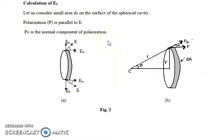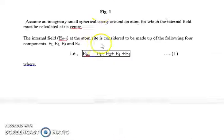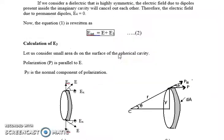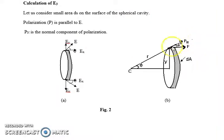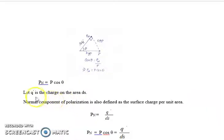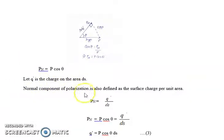In order to find out the electric field due to the charges induced on the surface of the spherical cavity, let us first imagine a small area dS on this surface. The electric field direction is this way, and the polarization direction is going to be parallel to the electric field. Let us consider Pn as the normal component of polarization. From here, Pn is nothing but P cosθ. Let Q' be the charge on the area dS, and by definition the normal component of polarization is nothing but the charge per unit area.